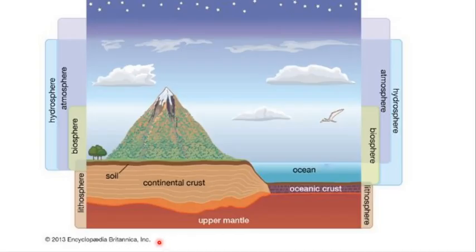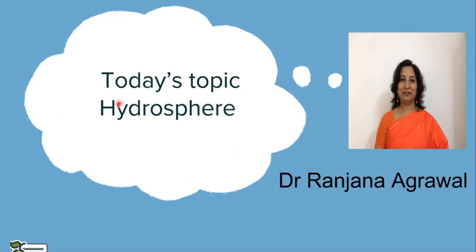Hello everyone, these are the components of environment: hydrosphere, atmosphere, biosphere and lithosphere. The biotic component comes under biosphere, the soil and crust and mantle portion is known as lithosphere. This portion is called atmosphere and this portion including water is hydrosphere. Today's topic is hydrosphere.